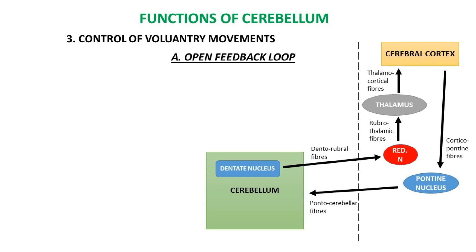The open feedback loop, also called the cerebro-cerebello-cerebral connection, includes the cerebro-ponto-cerebellar tract, which is formed by corticopontine fibers that end in ipsilateral pontine nuclei. Cerebellar fibers from the pontine nuclei pass through the middle cerebellar peduncle of the opposite side and terminate in the lateral zone of the cerebellar hemisphere. Thus the whole afferent pathway is called the cerebello-ponto-cerebellar tract.